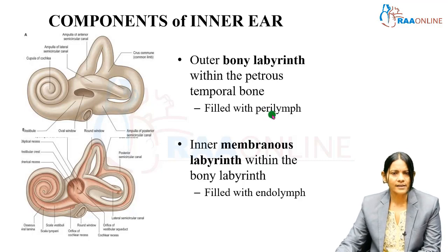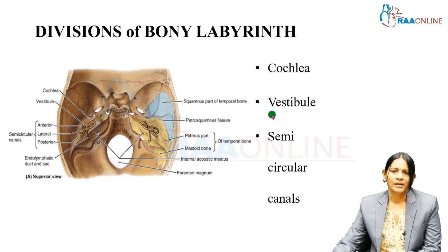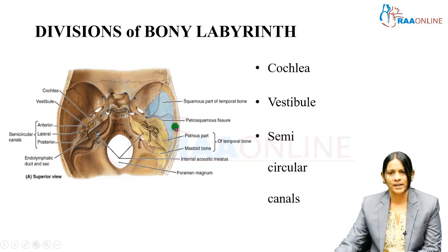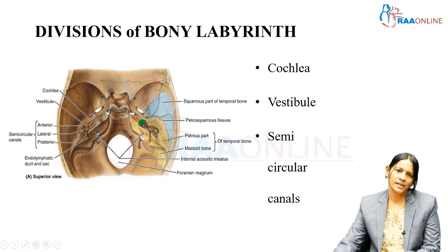We will see later what are the functions of perilymph and endolymph in the subsequent slides. As I just told you, the bony labyrinth is in turn divided into cochlea, vestibule, and semicircular canals. Just to get a picture of how it will be within the cranial fossa — this is the temporal bone where there is the external acoustic meatus and the auricle. The auricle will be here at the external acoustic meatus, this is the area which is the tegmen tympani, and here will be the middle ear.